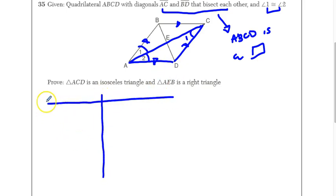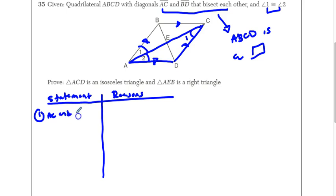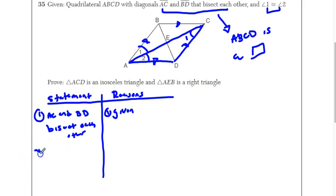We're going to write down our statements and reasons. My first statement is the given: AC and BD bisect each other. That's given number 1. And then I know angle 1 is congruent to angle 2 — that's also a given.